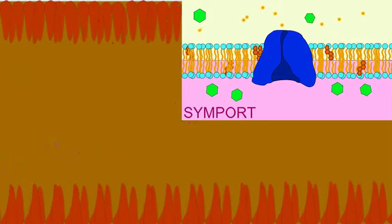Once starch, dextrins, and the various disaccharides have been converted to the monosaccharides glucose, fructose, and galactose, these monosaccharides can then be absorbed into the cells of the small intestine. Glucose and galactose enter intestinal cells through secondary active transport.